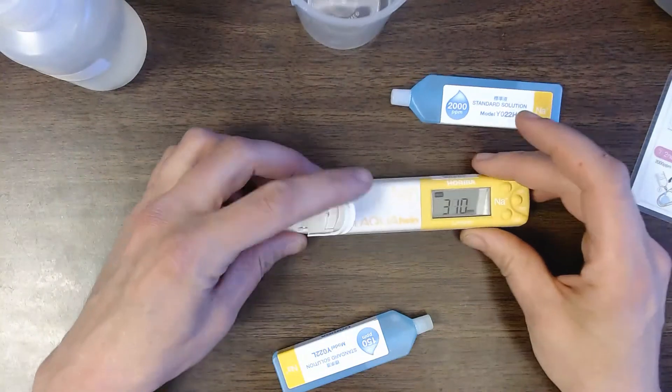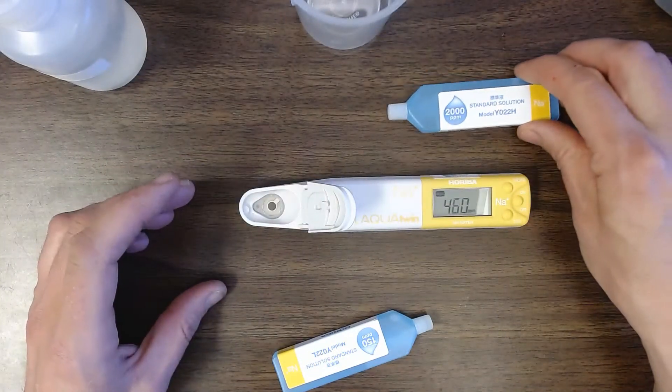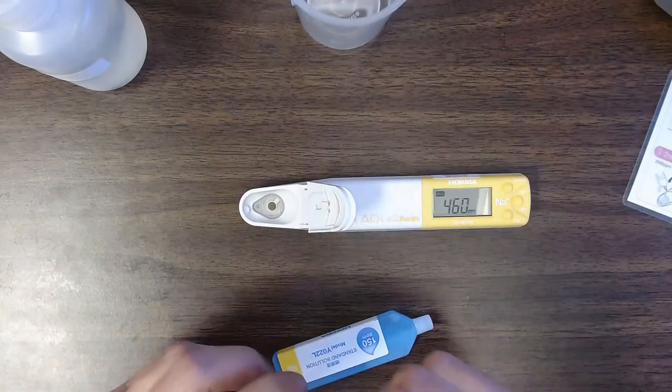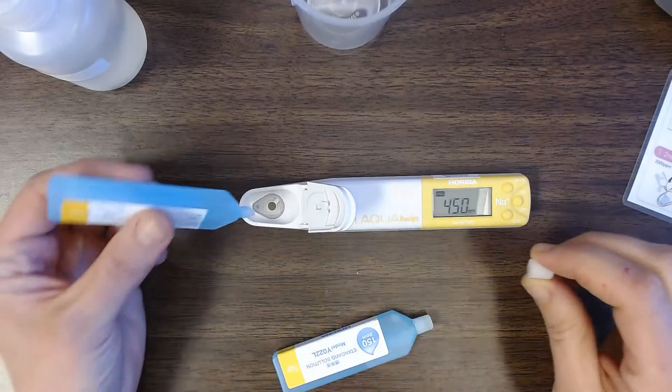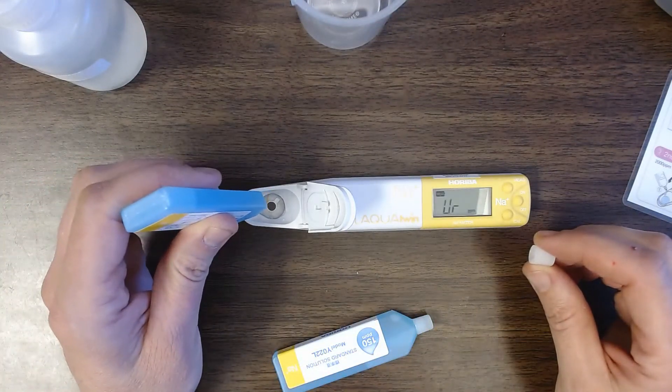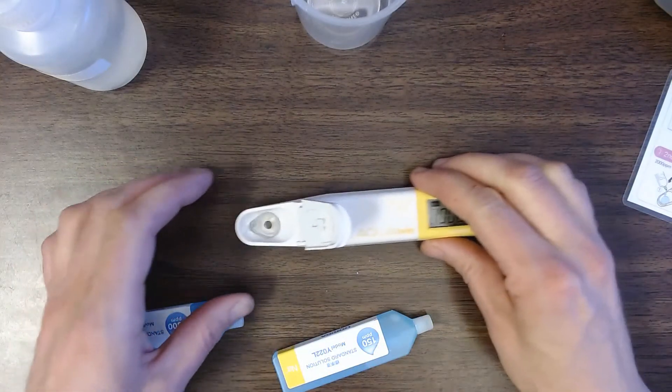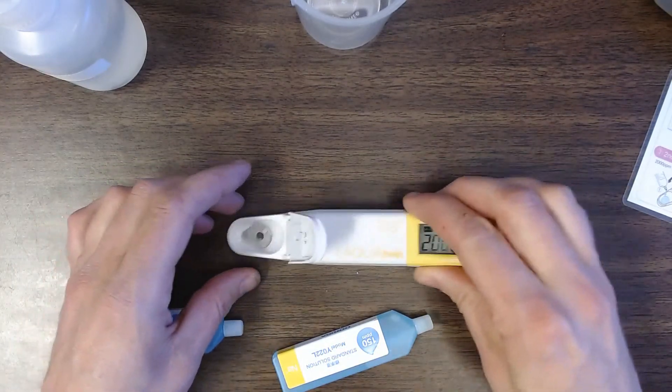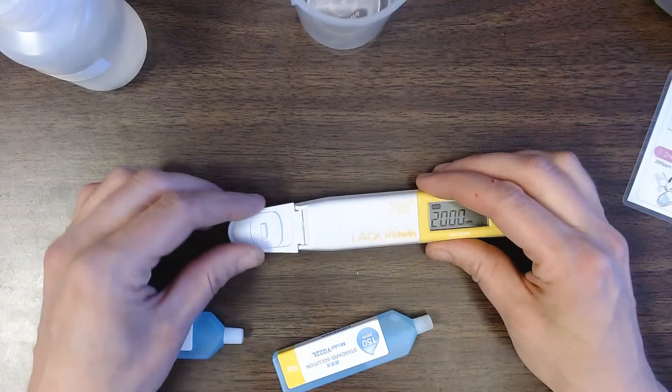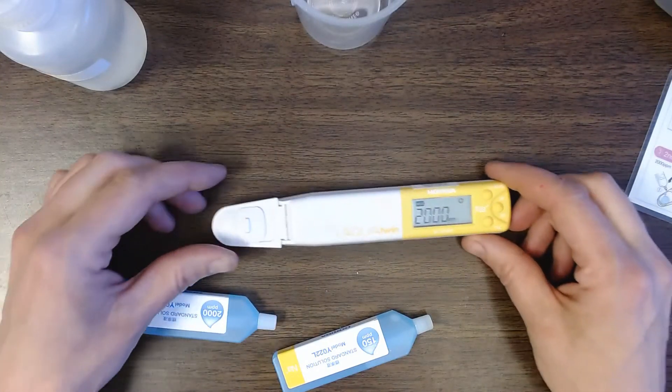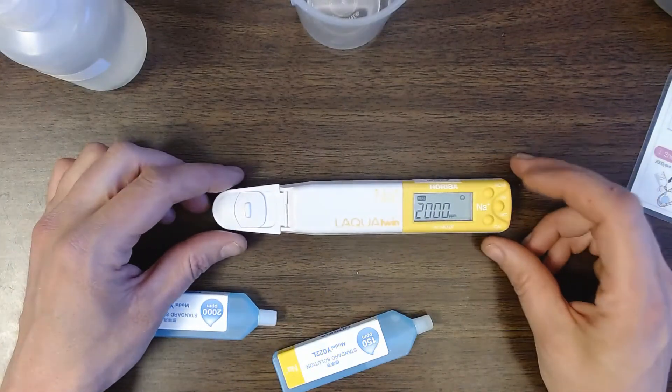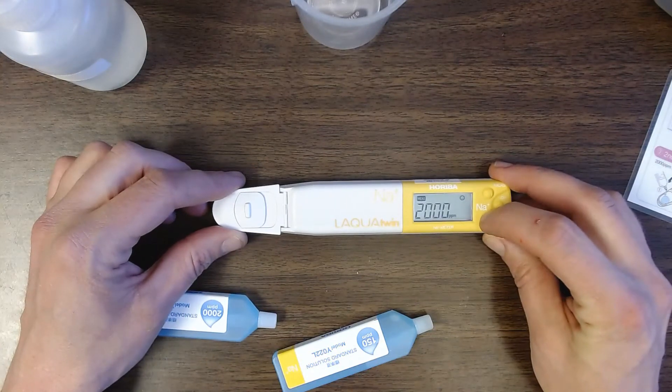Now we're ready to calibrate with the higher salinity solution. So 2,000 parts per million. Squirt that in. Give it a little shaky shake. Okay. Close the sensor. It's already reading 2,000 parts per million. So that's promising. But again I'm going to press the cal button.